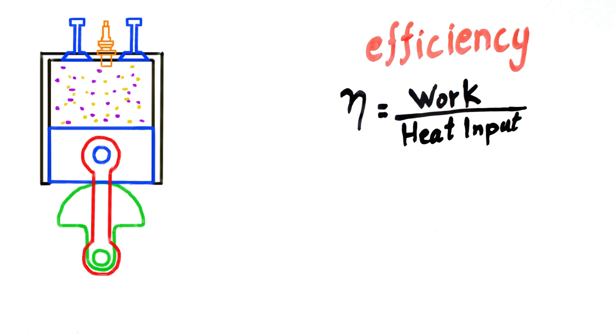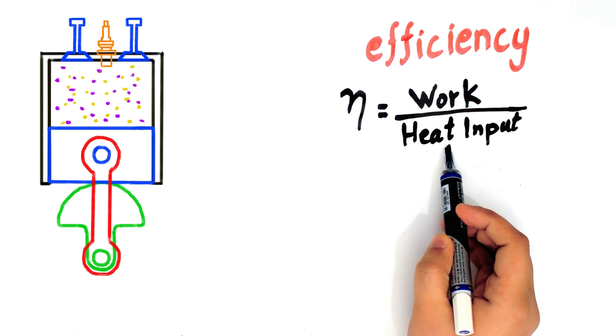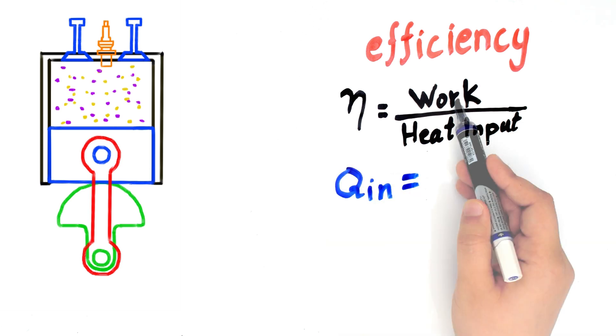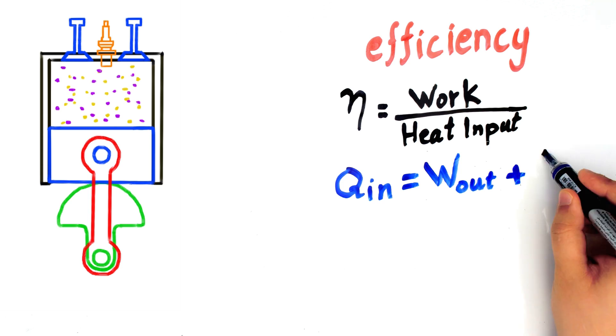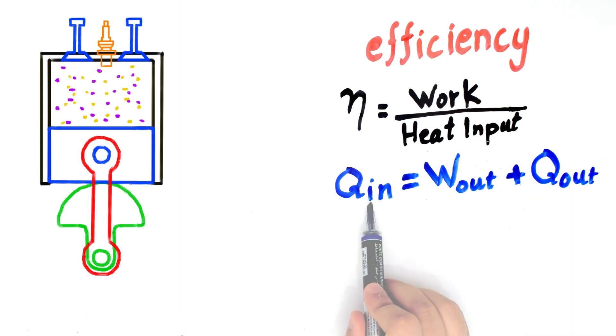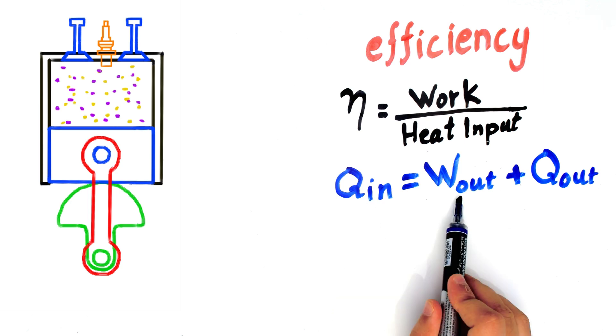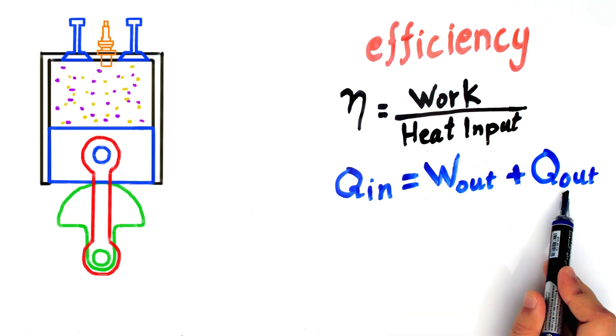So using the energy conservation law, we can write that the heat input, let's call it Qin, equals the work output that we are using to run the car, let's call it Wout, plus the heat lost, let's call it Qout. Again, the heat we put into the engine is converted into some useful work to run the car and some lost heat.